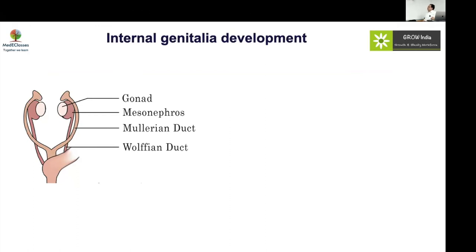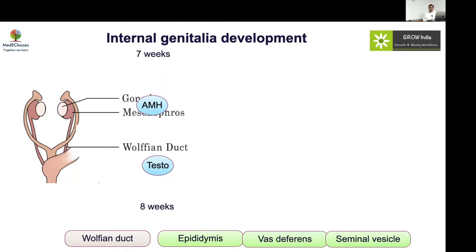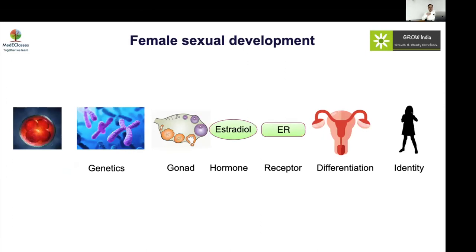Regarding internal genitalia development: the Mullerian duct and Wolffian duct are initially both present. From the testes at seven weeks, AMH causes regression of Mullerian structures; by eight weeks, testosterone stabilizes the Wolffian structure, which develops into the epididymis, vas deferens, and seminal vesicle. Defects in testosterone production before 12 weeks have major implications for both internal and external genitalia; beyond 12 weeks, only micropenis results.